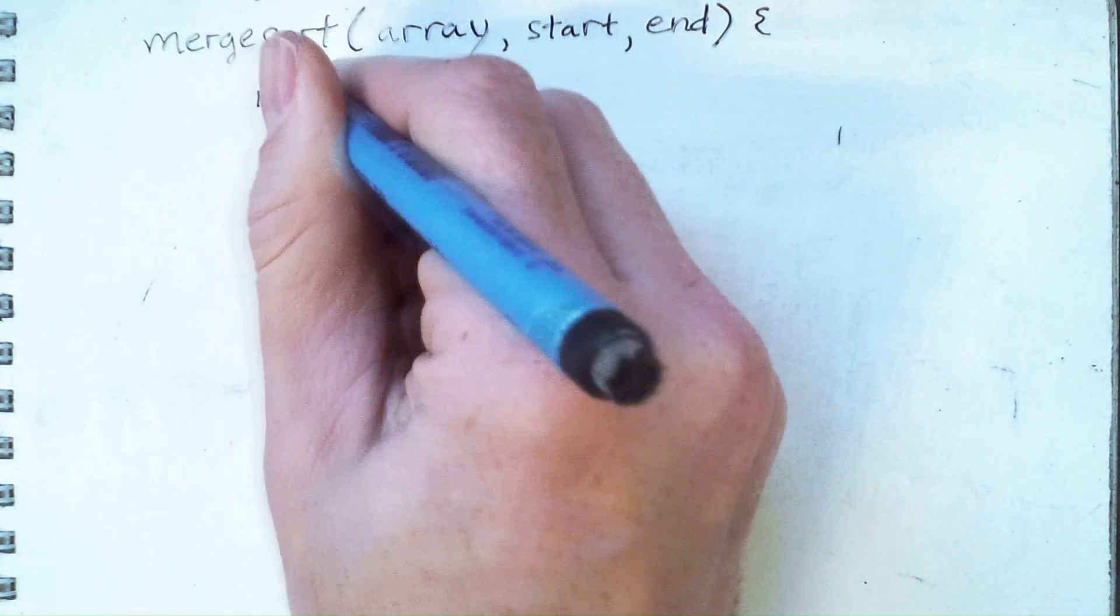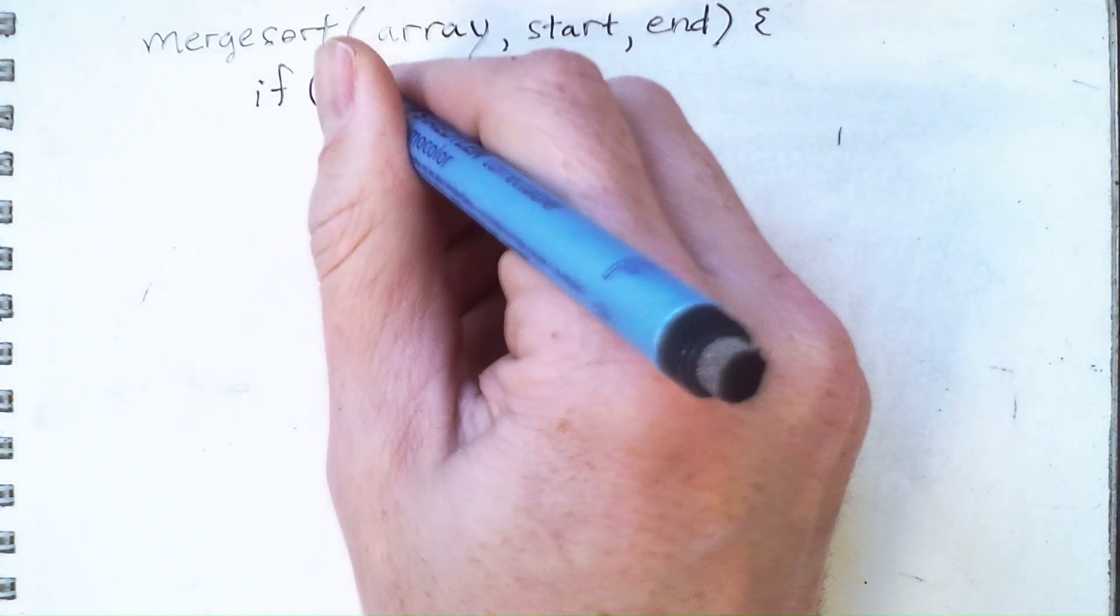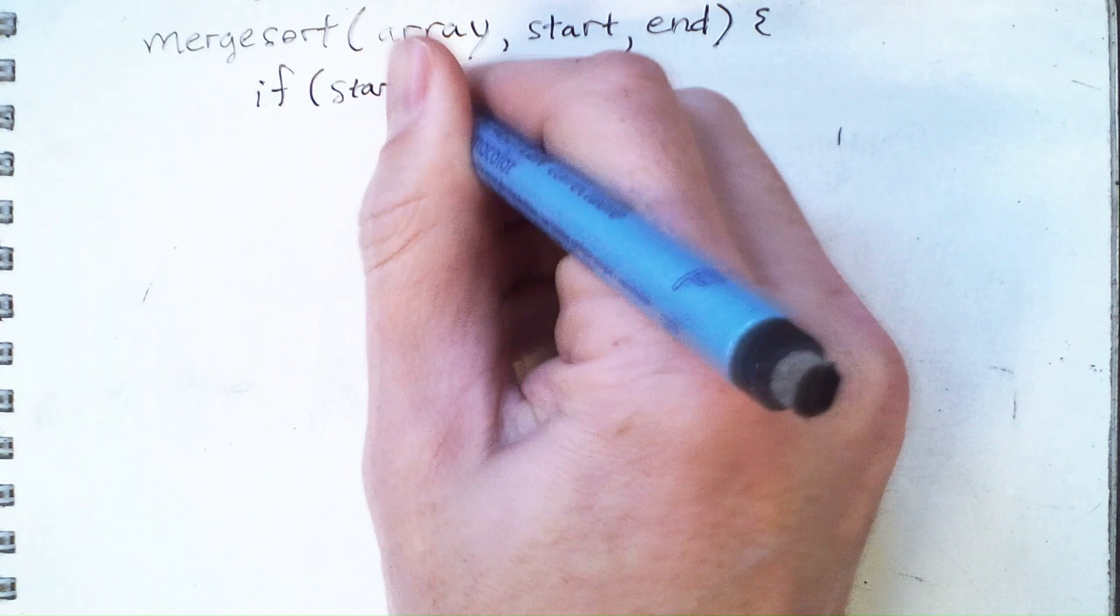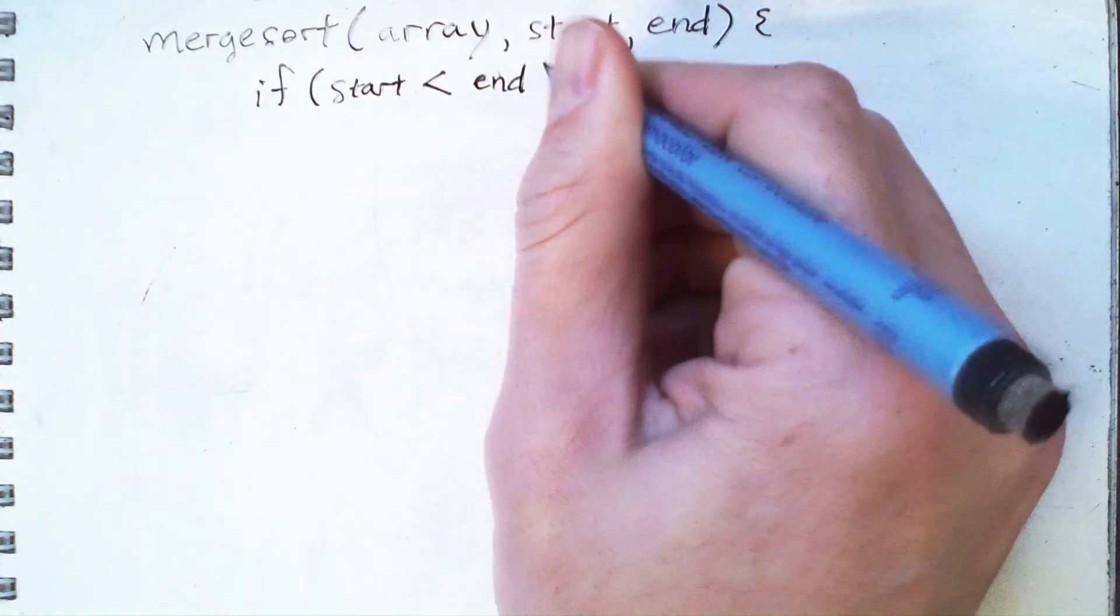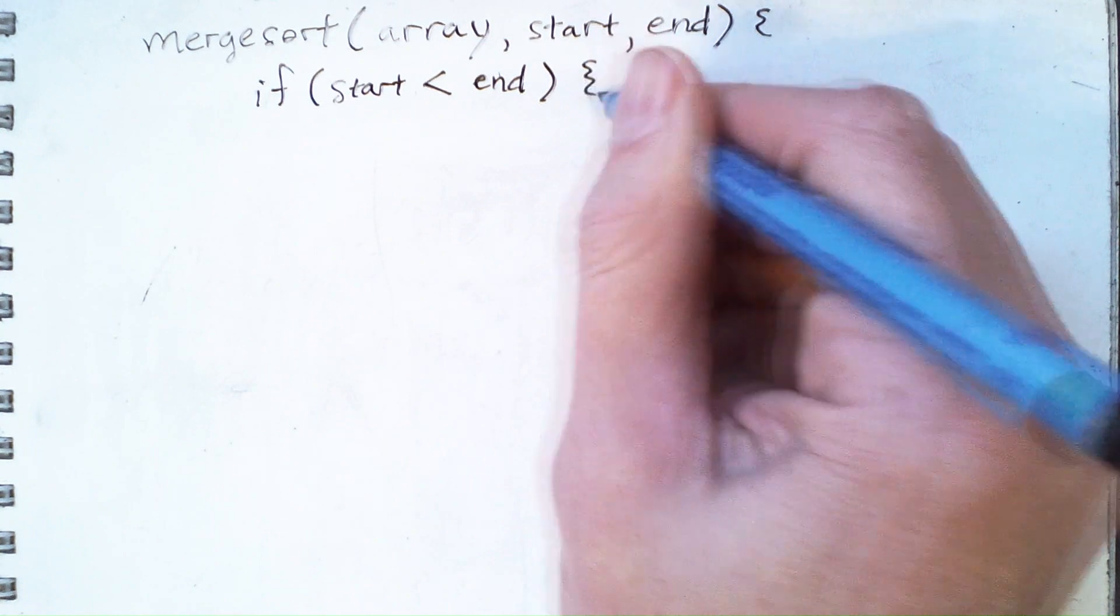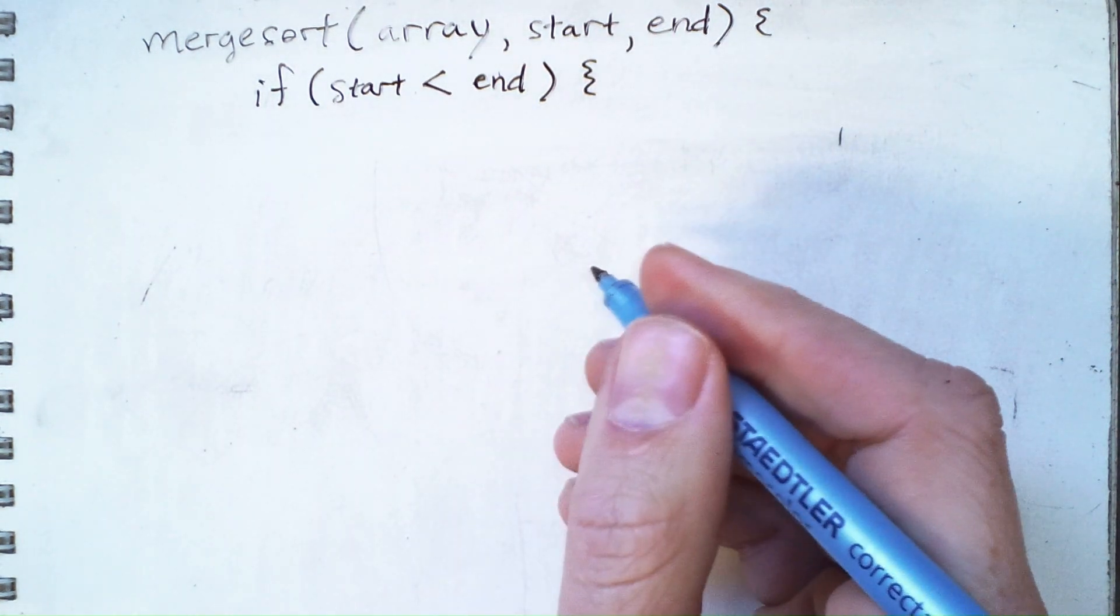Now we will only sort the array if the start index is actually less than the end index, because we said earlier that an array or rather a subarray with only one element is already sorted.